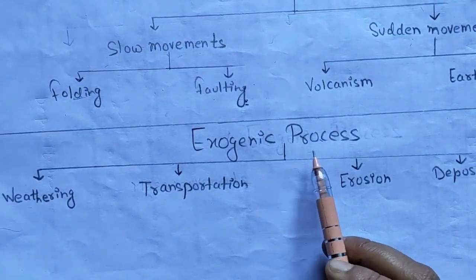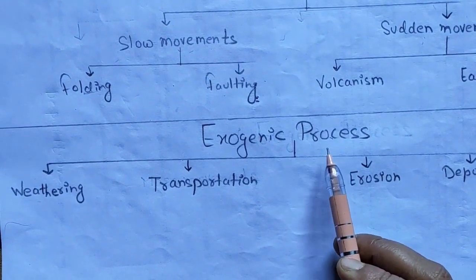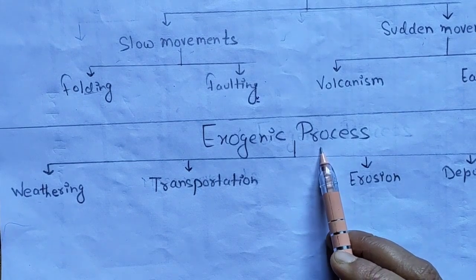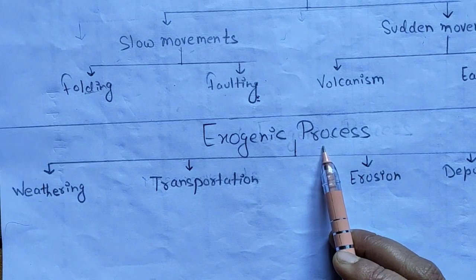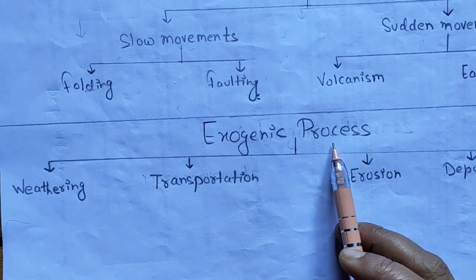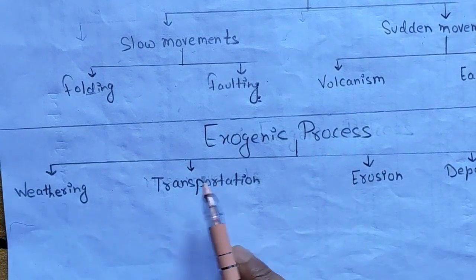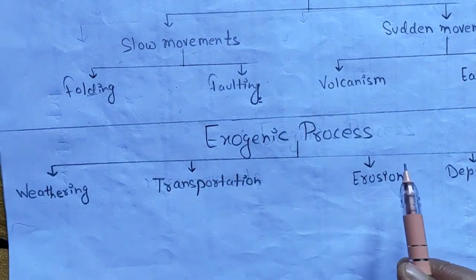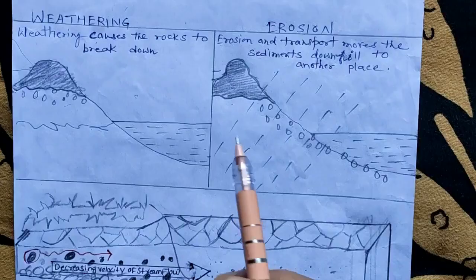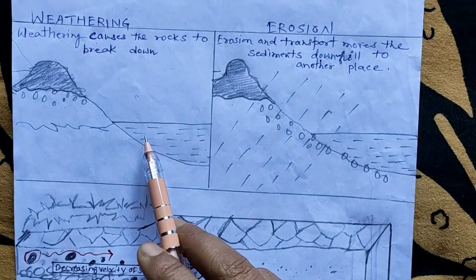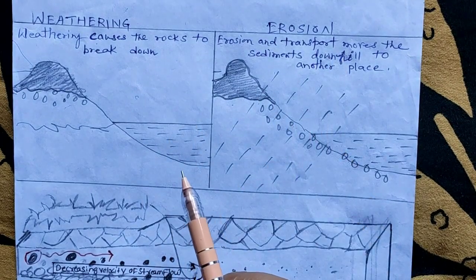Next are exogenic processes. Exogenic processes are forces which act on the earth's surface — for example, running water, moving ice, and wind. Exogenic processes are divided into four types: weathering, transportation, erosion, and deposition.